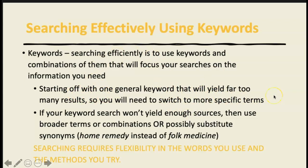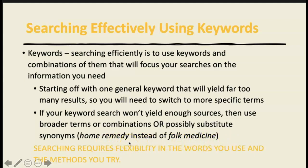You can start with one general keyword that yields far too many results, then switch to more specific terms. If your keywords don't yield enough sources, use broader terms, different combinations, or — and this is a really important key — substitute synonyms. Just like you'd right-click a word in a paper to find synonyms, sometimes using a synonym of your search term makes a difference. For example, if 'folk medicine' gets no results, try 'home remedy' instead — and there's what you were looking for.